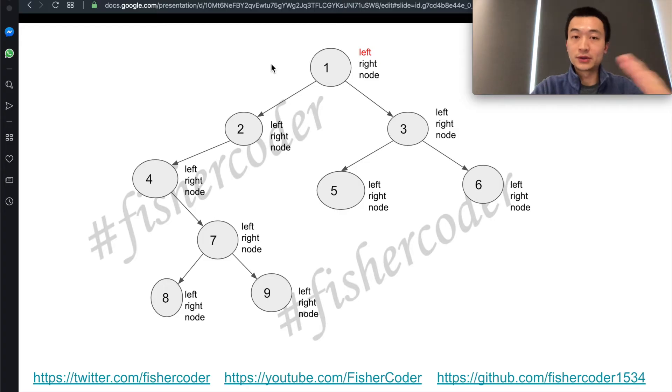So it'll go to its left node, left. It also has a left, so we'll go to its left. Then it will attempt to access its left node again, but it doesn't have anything, it's null. So it will go to its right node. It always follows this order, left-right-node, left-right-node. So it tries to access its right node, then this is the right node. Then for this right node, it also has to follow this order, left-right-node.